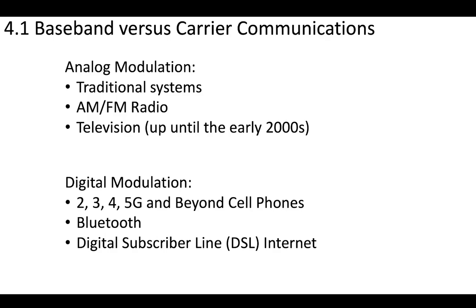Digital modulation includes things like 2 through 5G, plus whatever is beyond, which should be digital modulation. Additionally, your cell phone probably uses Bluetooth — this is a digital modulation. You may have internet via DSL, which is another type of digital modulation; in fact, it stands for digital subscriber line internet.